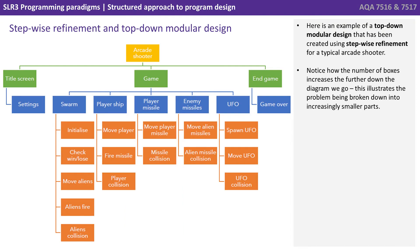Here's an example of a top-down modular design that has been created using stepwise refinement for a typical arcade shooter. Notice how the number of boxes increases the further down the diagram we go. This illustrates the problem being broken down into increasingly smaller parts.